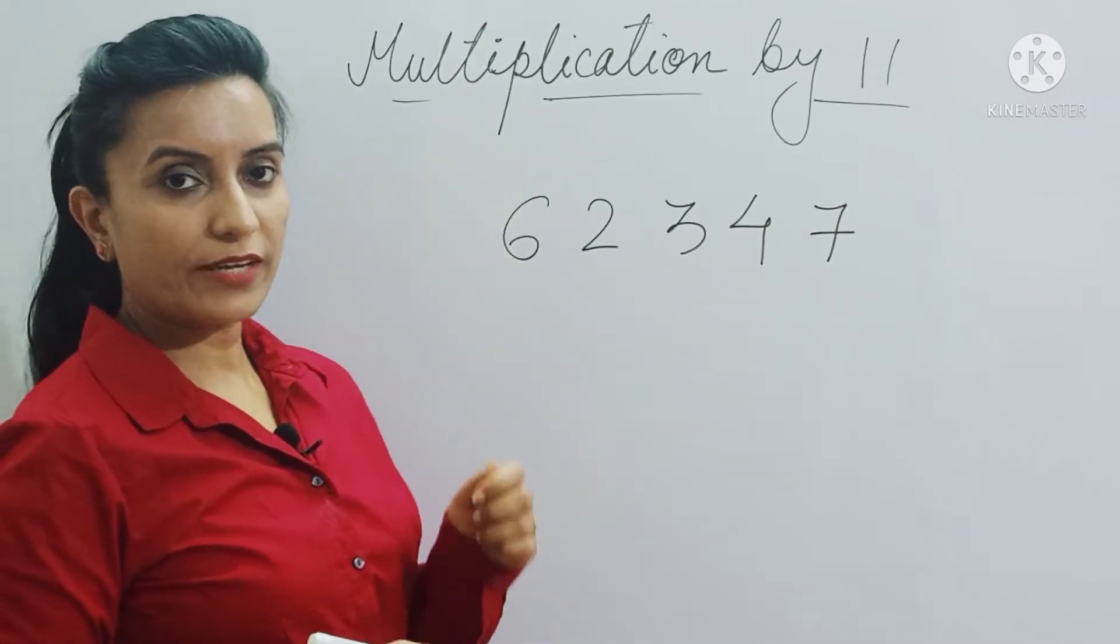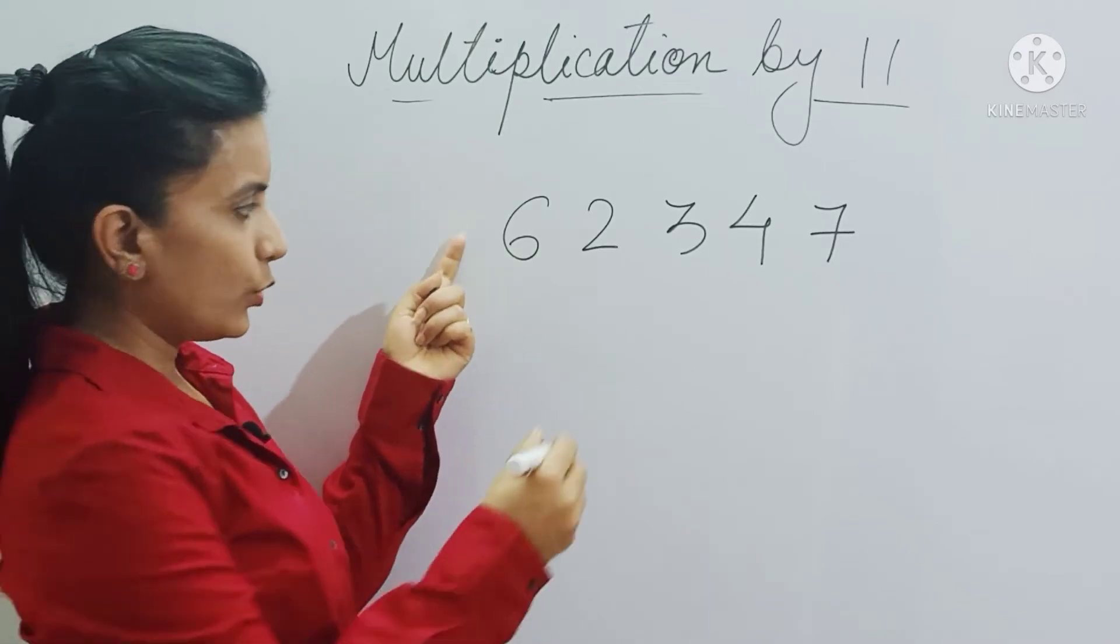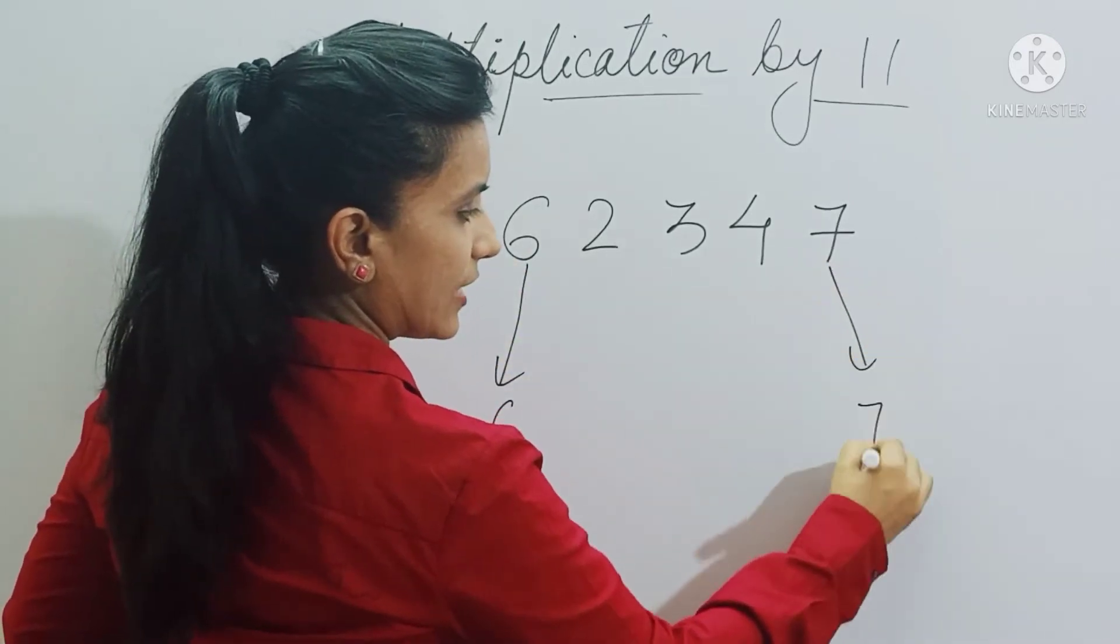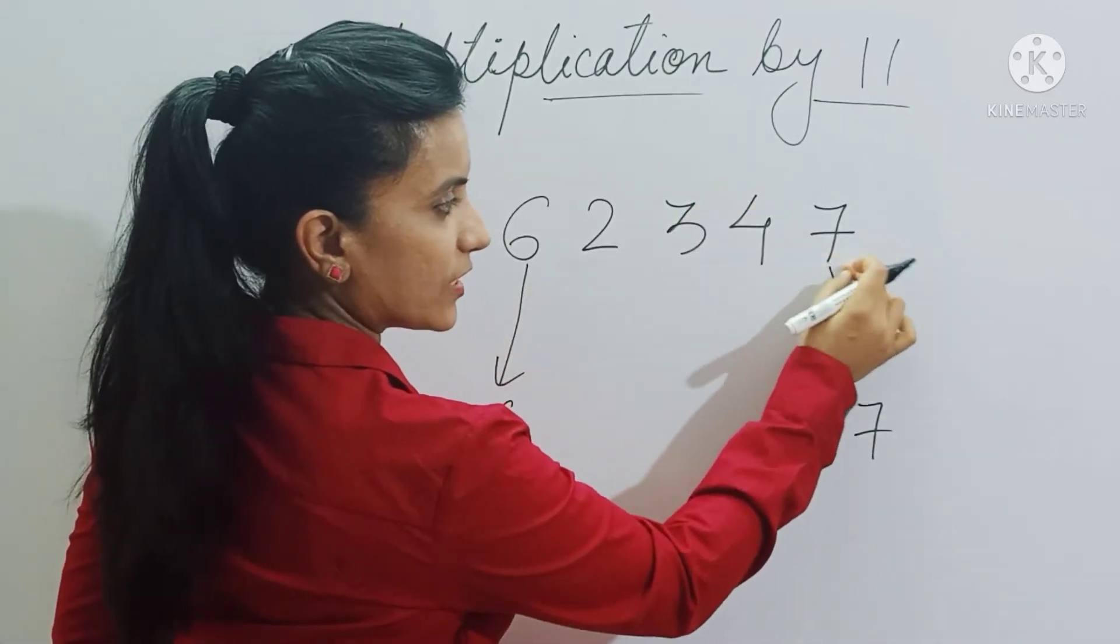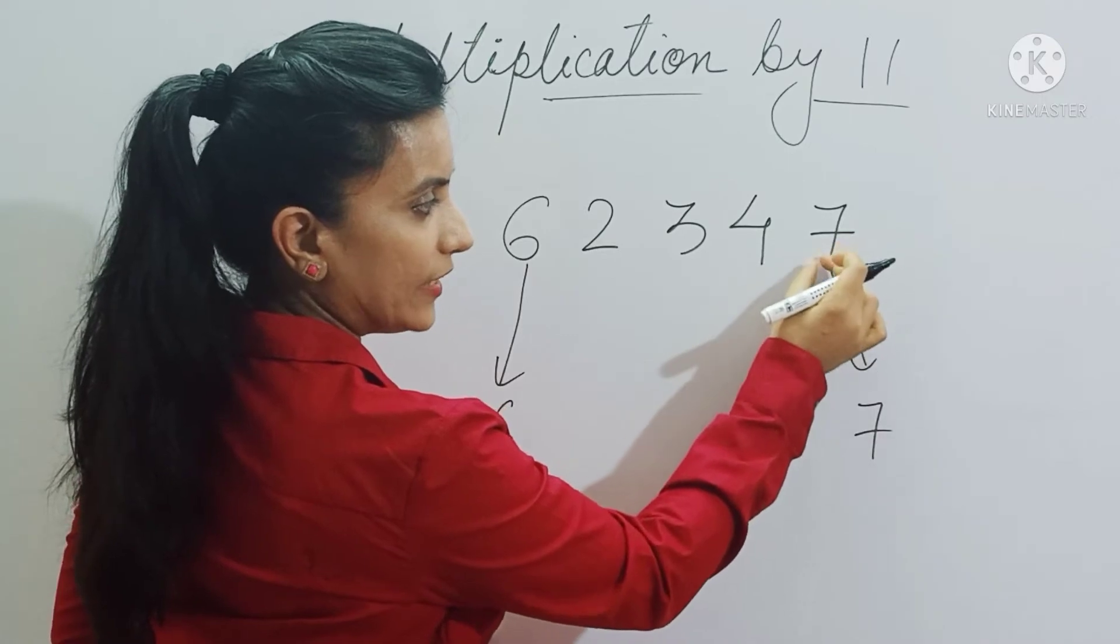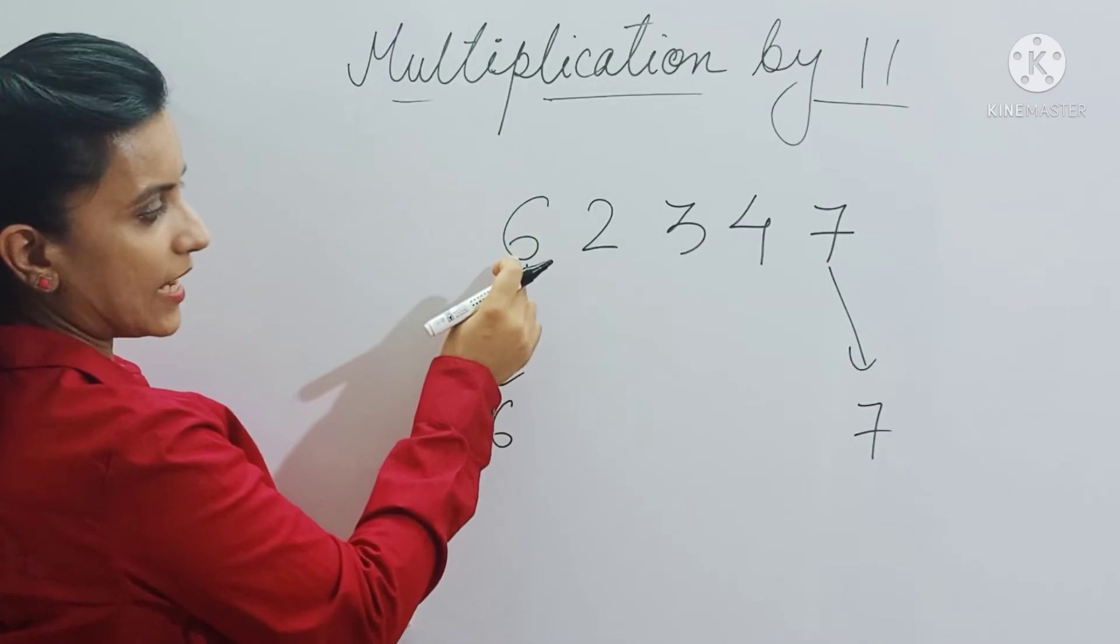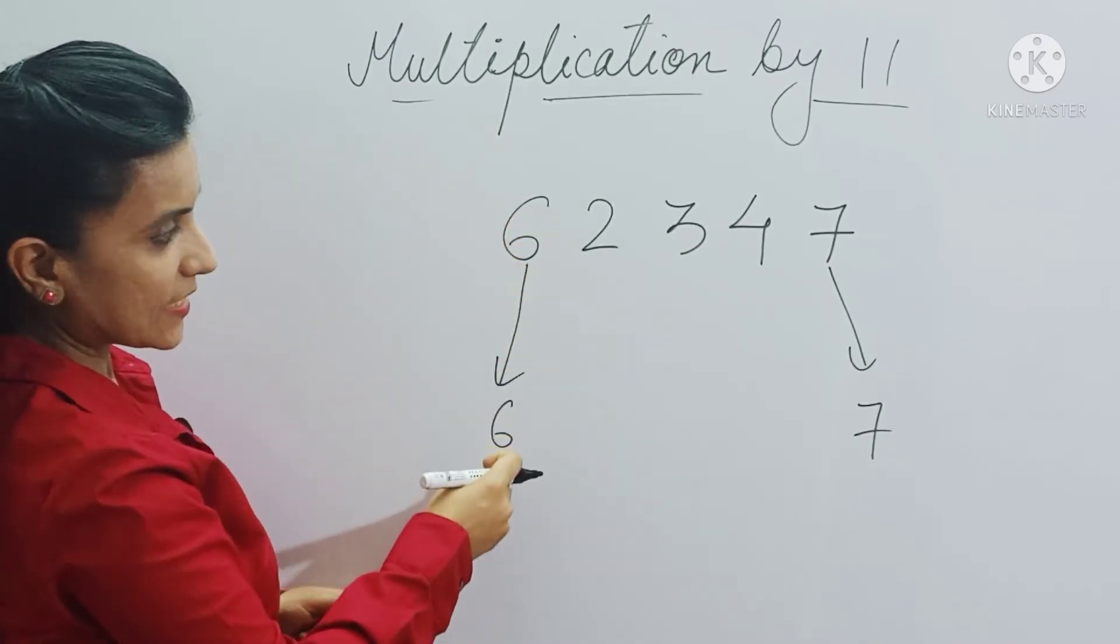Now we were writing 0 here and here, right? So this time we will not write down the 0. We will copy 6 and 7 as it is. Now why we are copying? We were adding 7 with 0, right? Now if you add any number with 0, the sum doesn't change. So let's copy 7 as it is. And here also we were adding 6 with 0, so sum doesn't change. So let's copy 6 as it is.